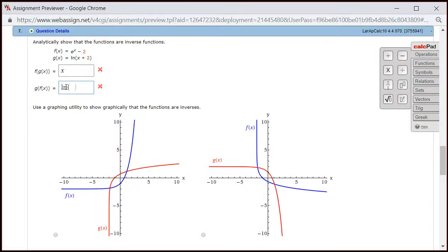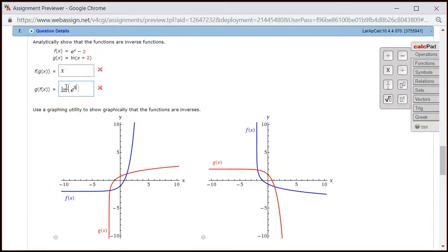Then we have, let's say x is now e to the x minus 2, but you have to add 2 to it. Then if you look at it,